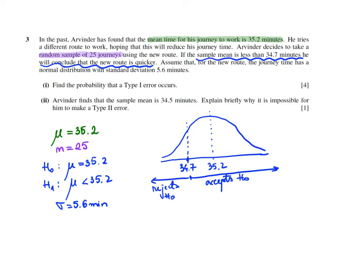Find the probability that a type 1 error occurs. And we know now that the type 1 error is identical with a significant level. So this one is your answer to part I. The probability of a type 1 error.